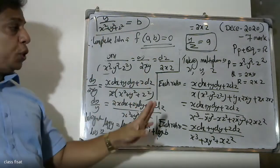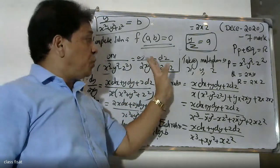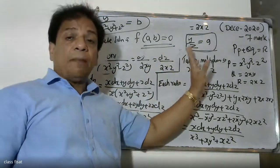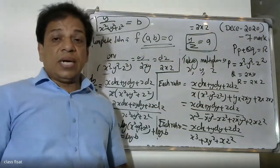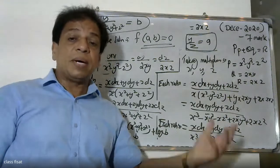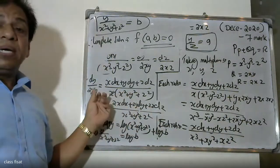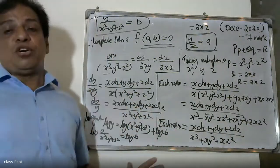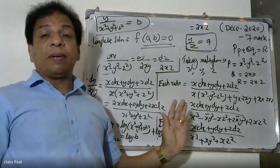So we have solved this problem using two methods: the first method is the grouping method, where we compared the second and third ratios directly. The second method is the multiplier method, using multipliers x, y, z to form a combined ratio.